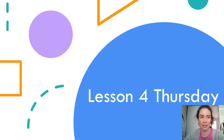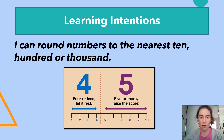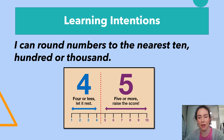This is Thursday's lesson. What we're focusing on today is rounding numbers. I can round numbers to the nearest ten, hundred or thousand — we're just going to focus on tens and hundreds today, not thousands, because we're just starting out. If the number is four or less, we round it down. If it is five or more, we round it up. A little rhyme: four or less, let it rest — round down. Five or more, raise the score — round it up.